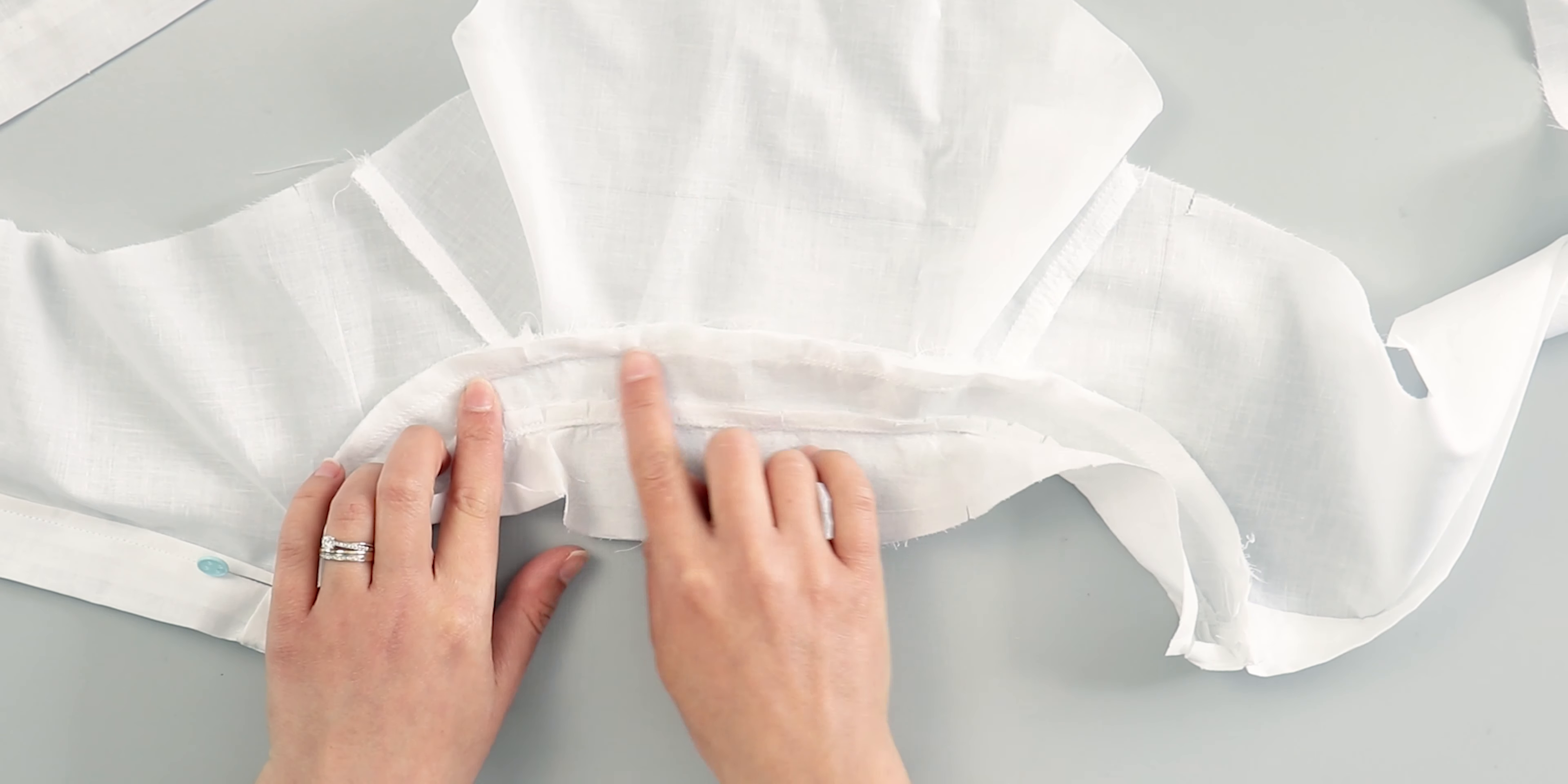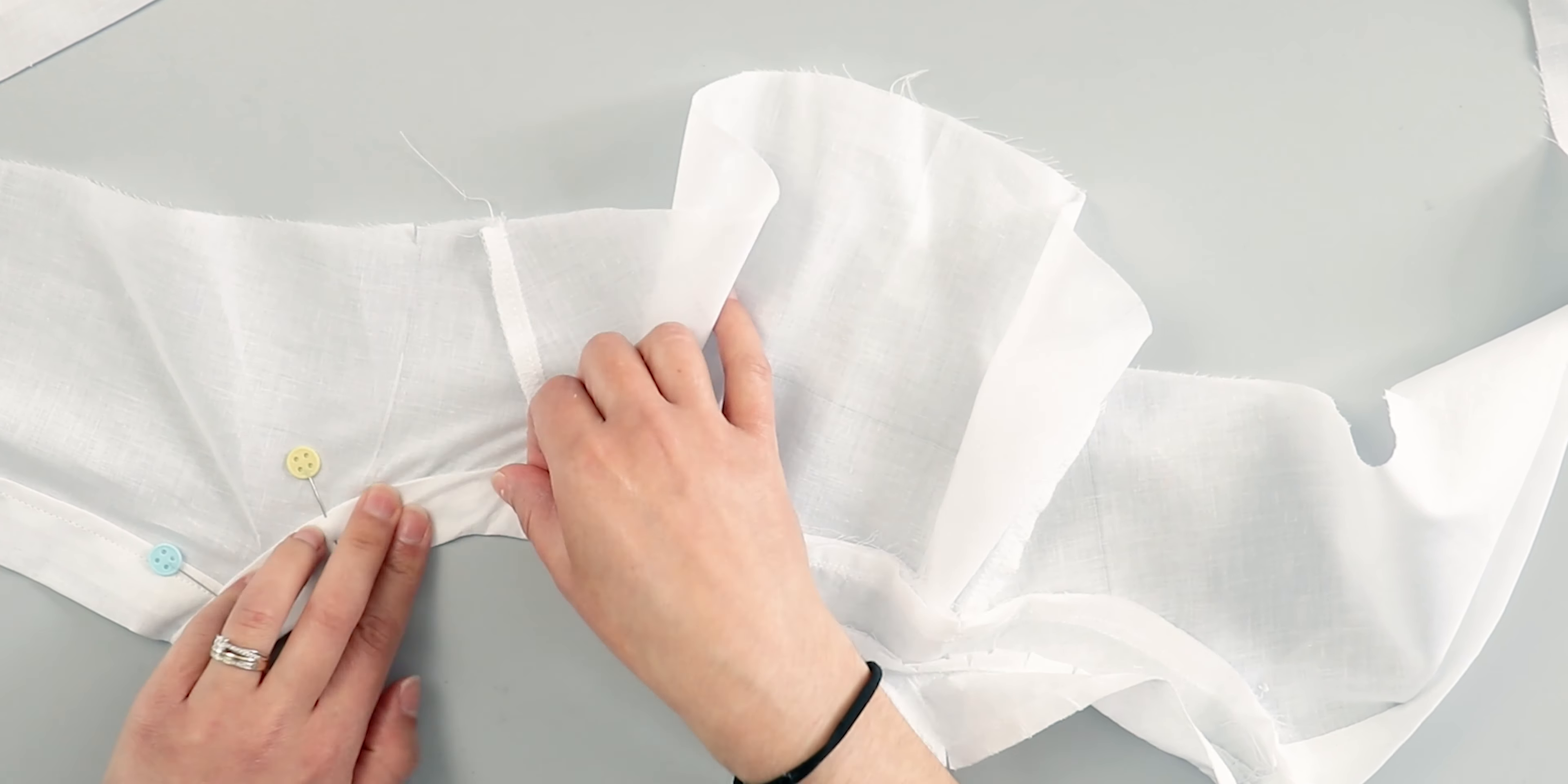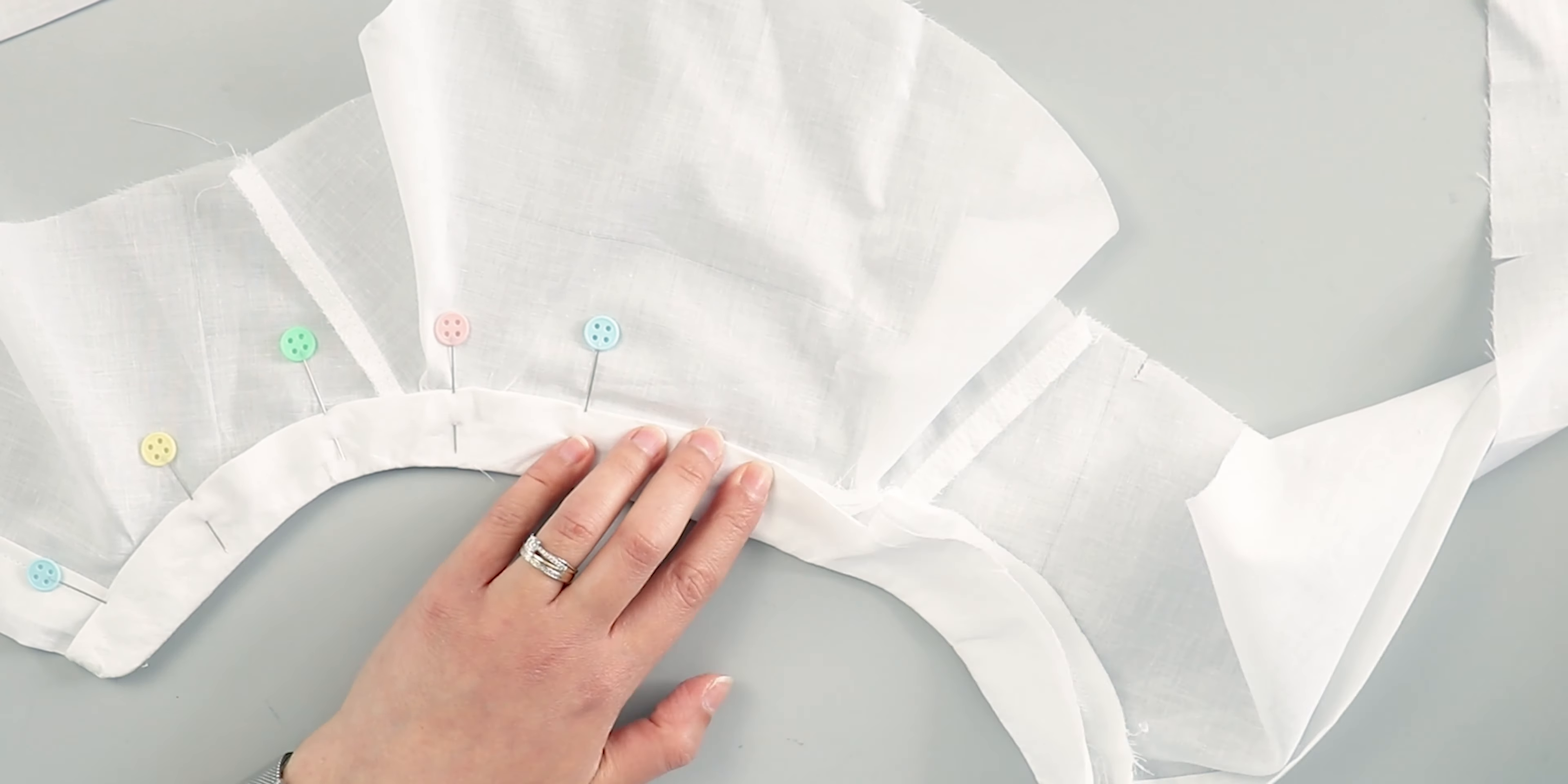Fold the collar piece that we ironed over to the right side of the neckline. The fold line should match the previous stitching. Pin and sew it into place.